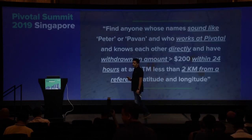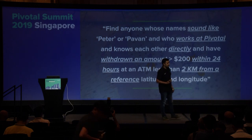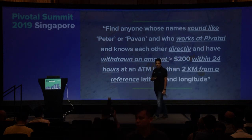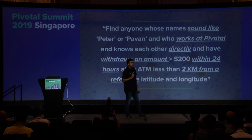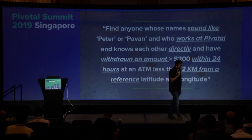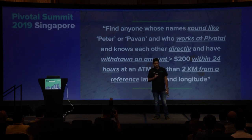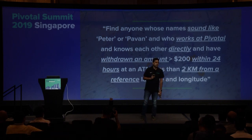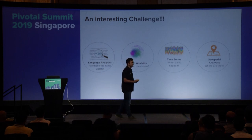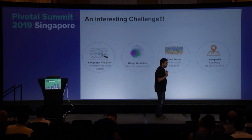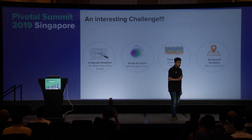The problem I'm trying to solve is I need to find out two people whose names sound like Pawan and Peter. One of those guys is my boss — not making it up — and both of them are working at Pivotal. They know each other directly. And one of them has withdrawn money yesterday within the last 24 hours in an ATM within 2 kilometers of a reference latitude and longitude.